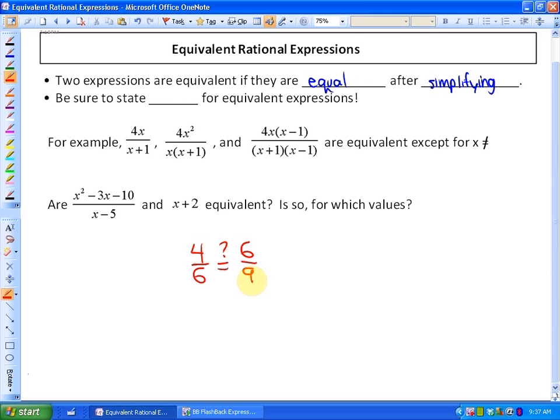What we did when we did those is we simplified them or put them into lowest terms. Four-sixths could be reduced to two-thirds, six-ninths could also be reduced to two-thirds. So our answer is yes, absolutely, four-sixths and six-ninths are equivalent because after we simplify them they are equal to each other.